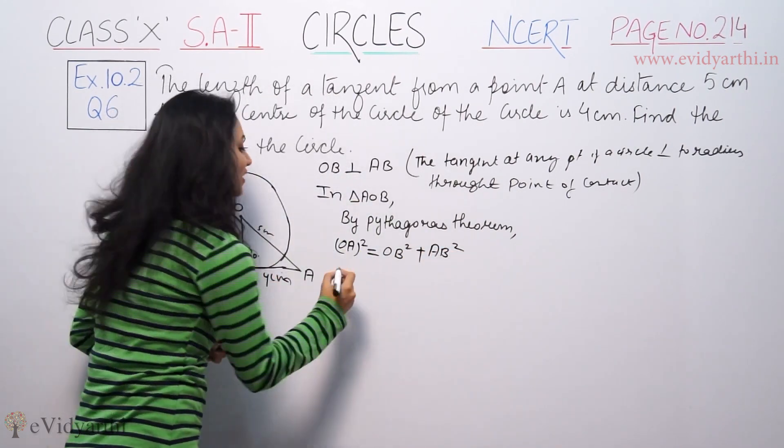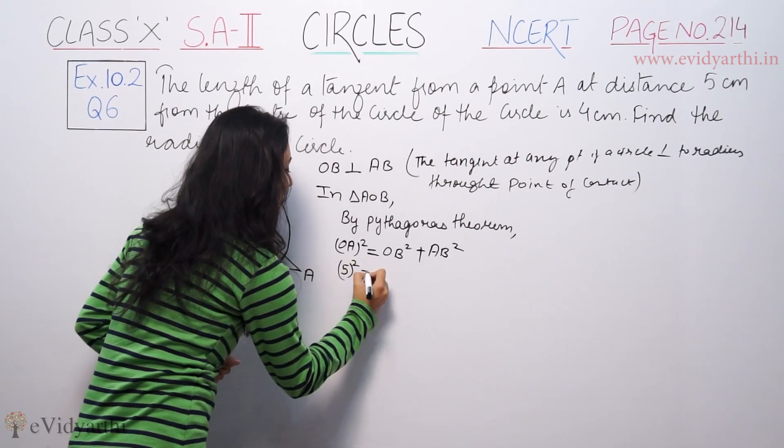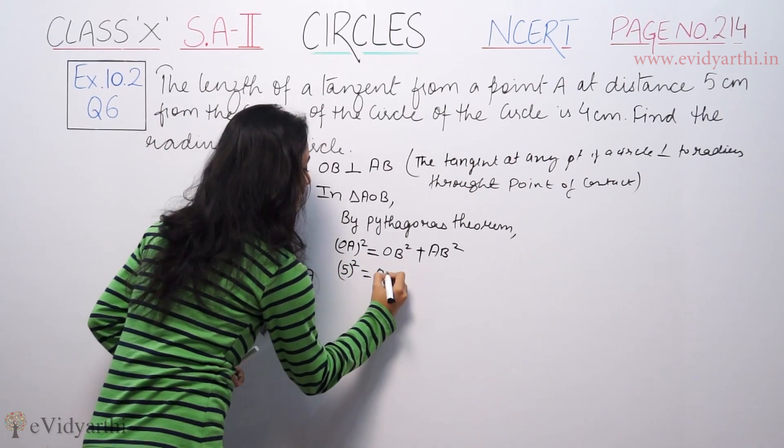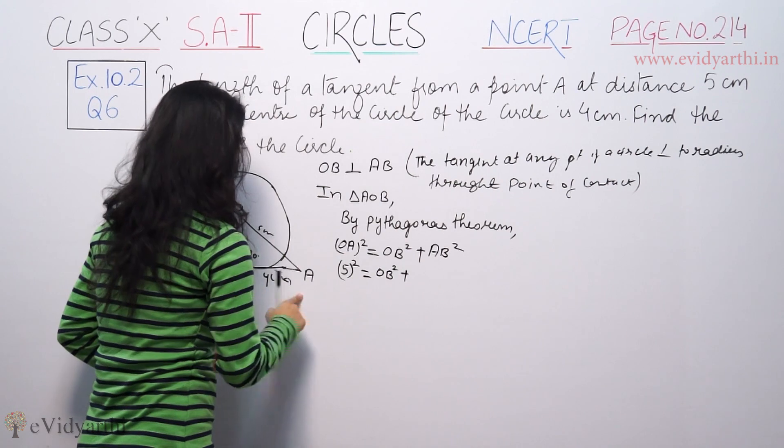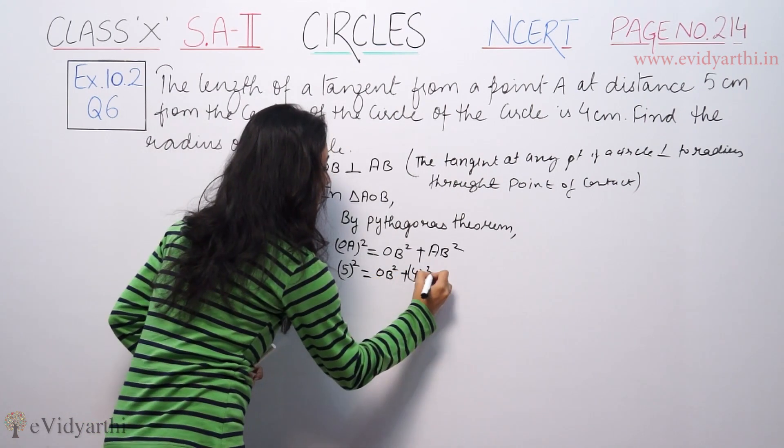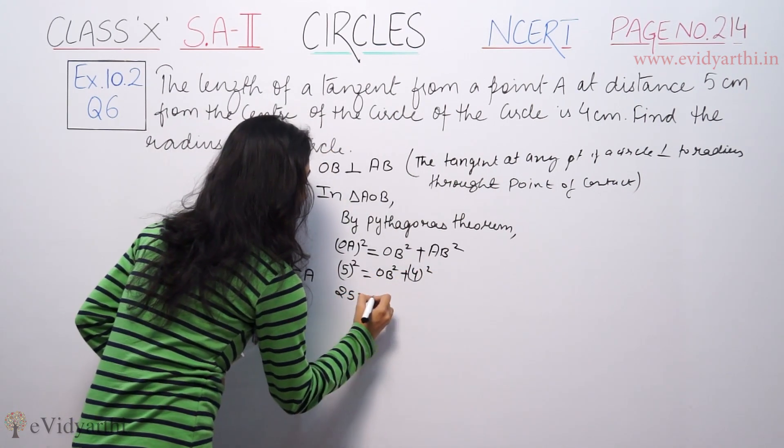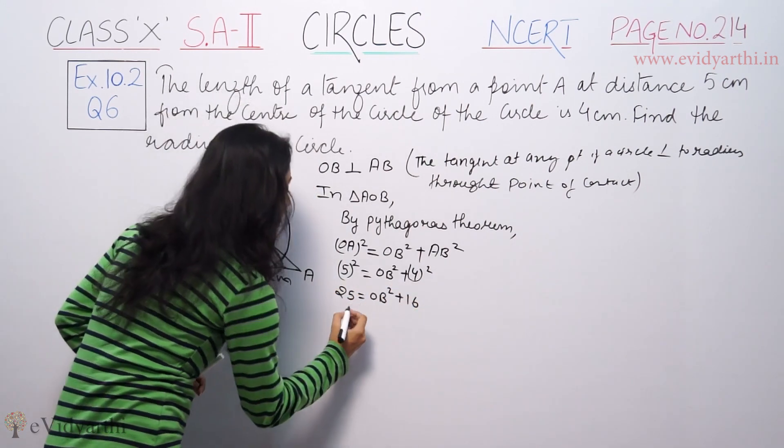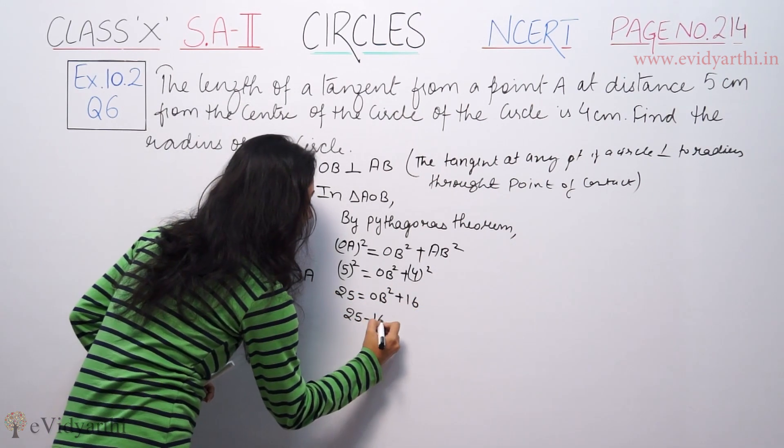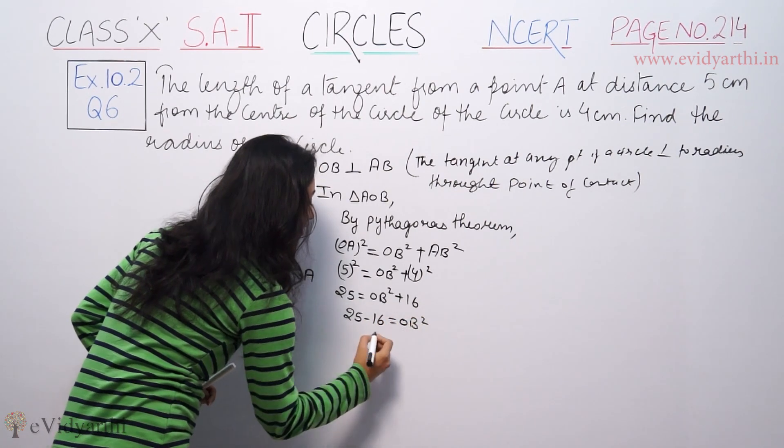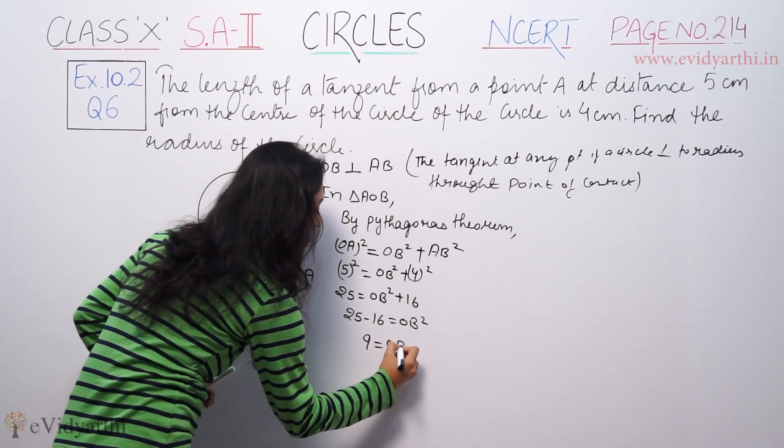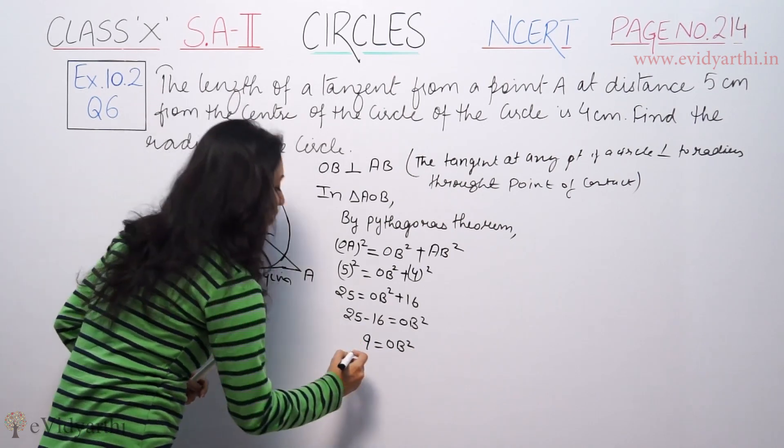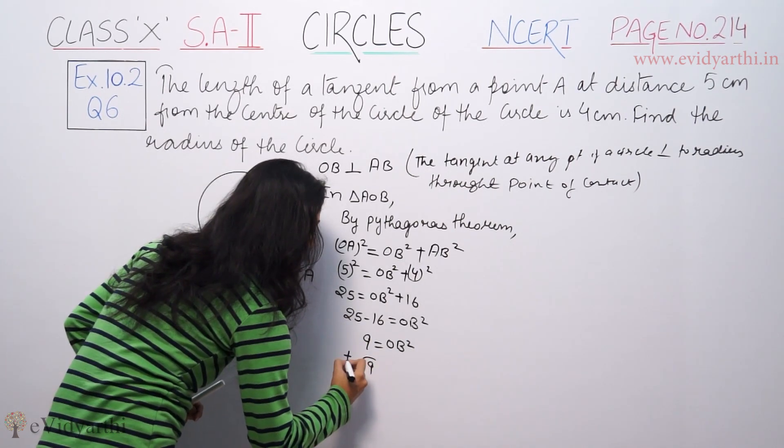So OA value given is 5, 5 squared equals OB square plus AB square. AB value is 4 squared. So 25 is equal to OB square plus 16. So 16 to the other side, I can say 25 minus 16 is equal to OB square. That is 9 is equal to OB square. Square root gives the value plus minus. So OB equals plus minus 3 centimeters.